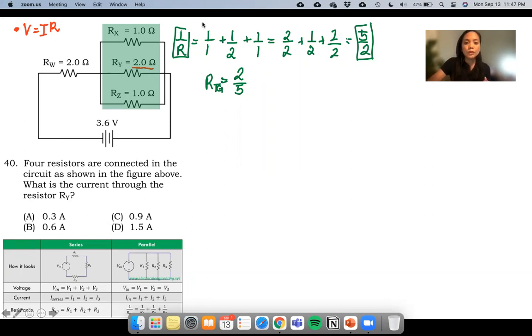Now, let's compute for the total resistance of the series. So this one. If we know already that this has a total of 2 over 5, let's add it.